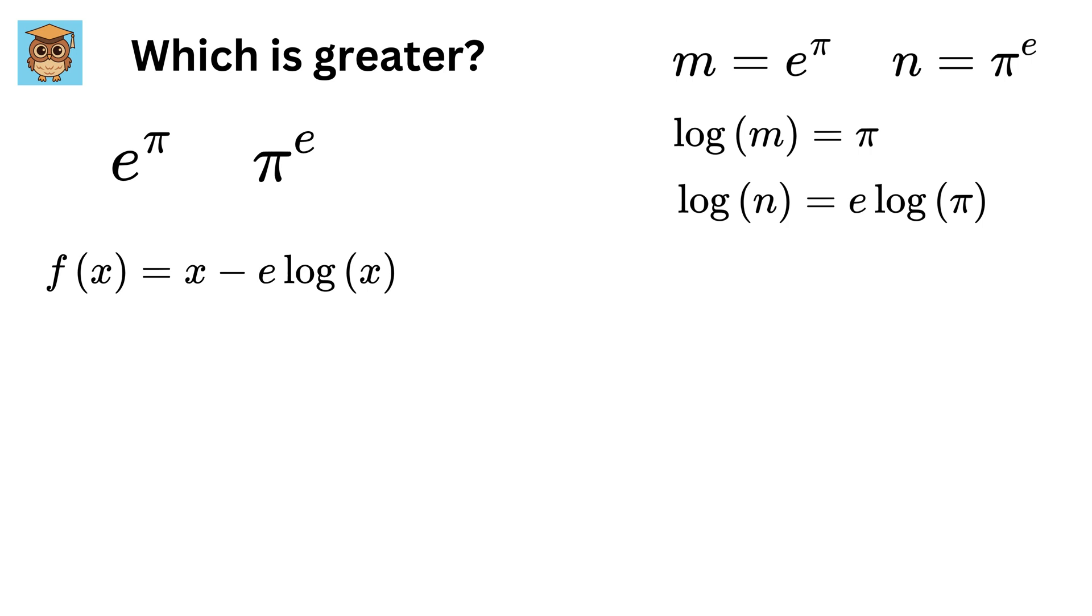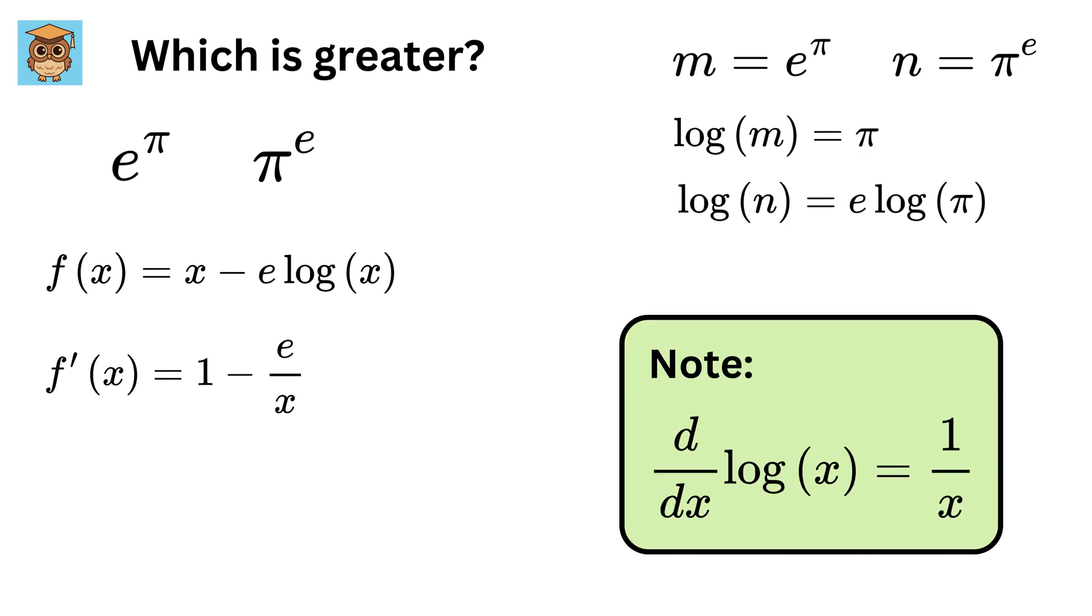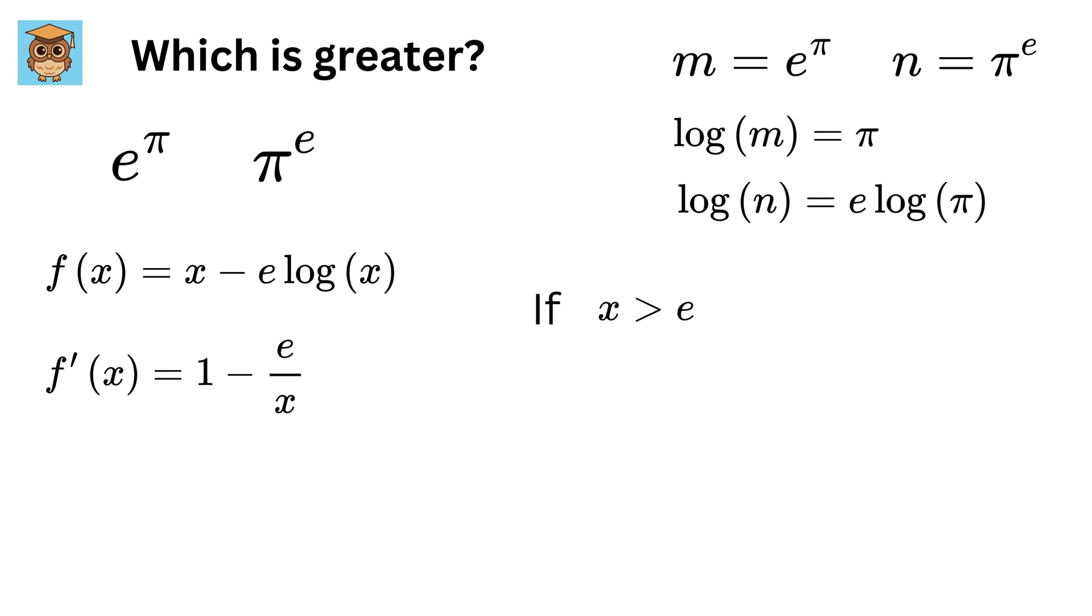The derivative is easy: it equals 1 minus e divided by x. Now if x is greater than e, divide both sides by x and we get 1 will be greater than e divided by x. So 1 minus e divided by x will be greater than 0, which means our derivative will be greater than 0.